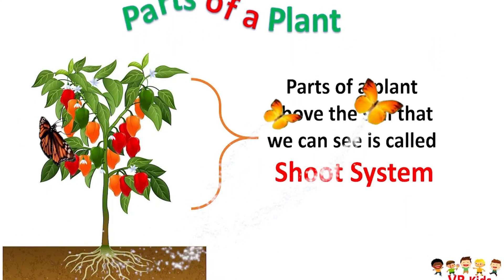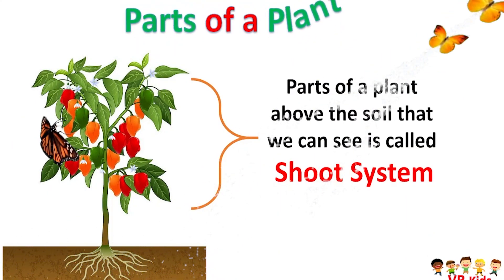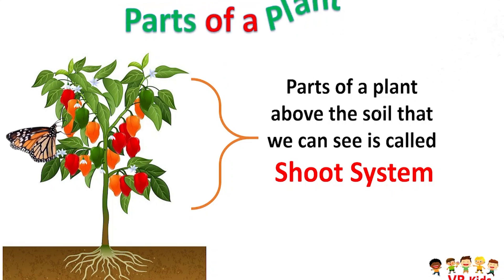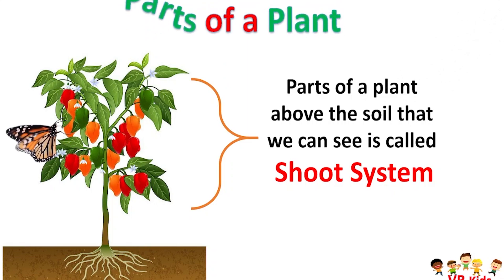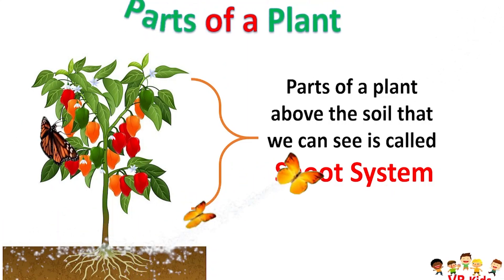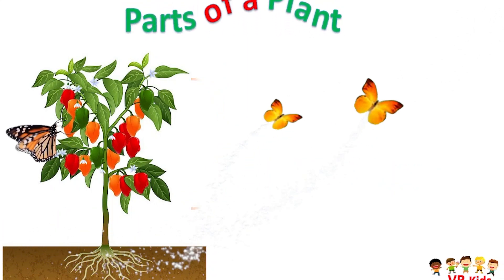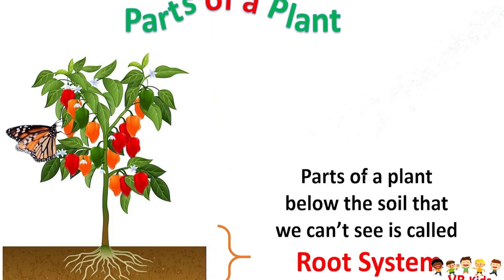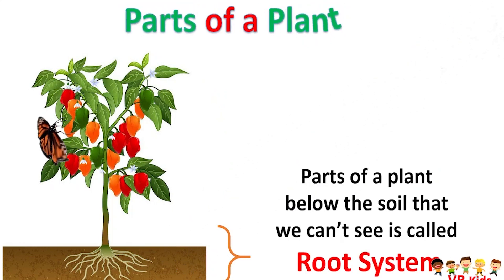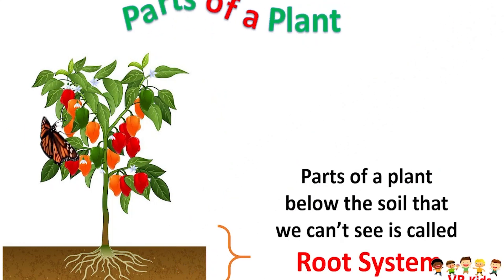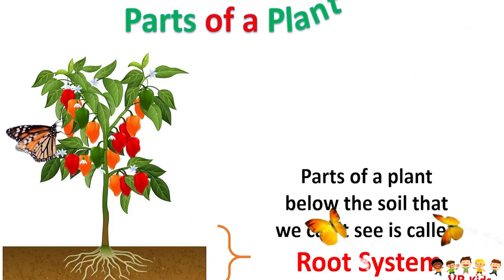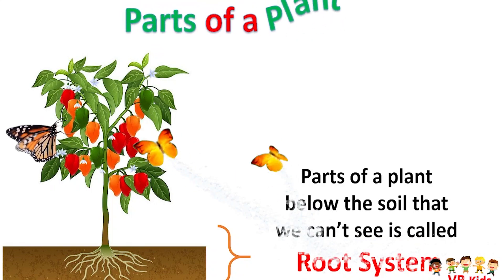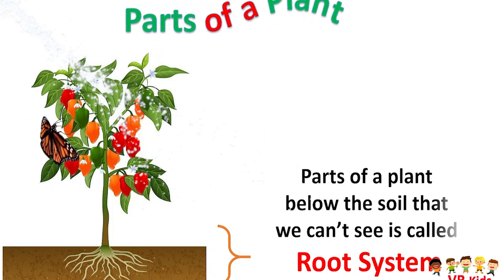Parts of a plant above the soil that we can see is called the shoot system. Parts of a plant below the soil that we cannot see is called the root system.